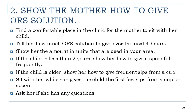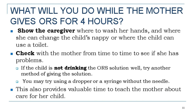Sit with her as she gives the child a few sips from a cup or spoon, and ask if she has any questions. While the mother gives ORS for four hours, show the caregiver where to wash her hands and where the child can use the toilet. Check with the mother from time to time to see if she has problems. If the child is not drinking the ORS well, try another method such as a dropper or a syringe without a needle.